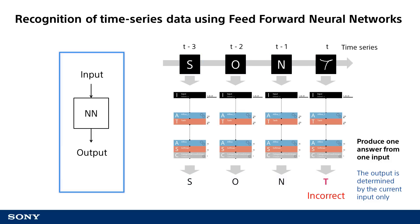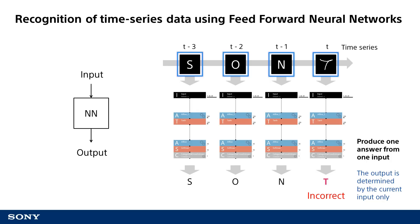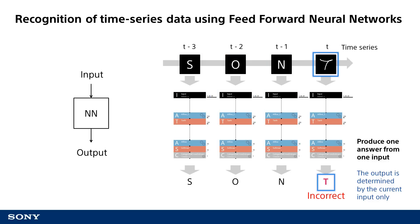The feed-forward neural networks we have already covered have a one-to-one configuration to produce one answer from one input. If a person were to see this character string of S, O, and N, they would easily determine that the next letter could likely be a Y to form the word Sony. A feed-forward neural network can only produce a result based on an input of one letter and so cannot factor time series data. If a neural network processes only the one letter, in this particular example, the image would likely be recognized as a T, which would be incorrect.